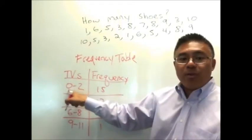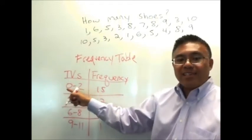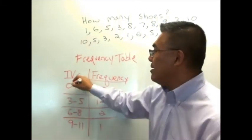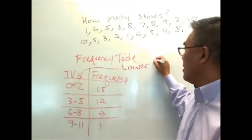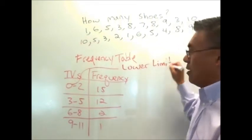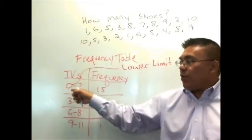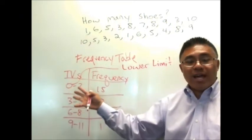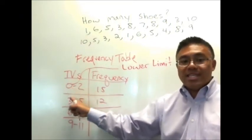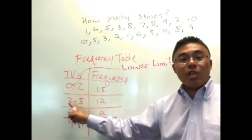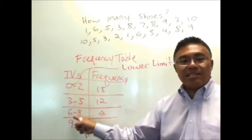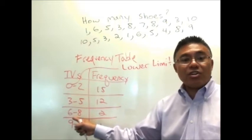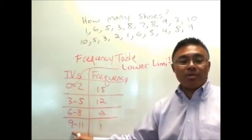The first number within the class is referred to as the lower limit. Okay? So here the lower limit's zero. That's where that class starts at zero. This is another lower limit. This is the lower limit of the next class, right? That's at three. This is another lower limit. That starts at six. And this is another lower limit. Starts at nine.